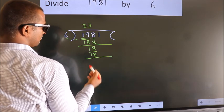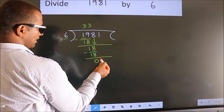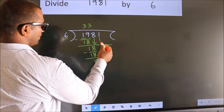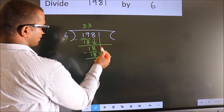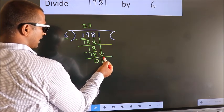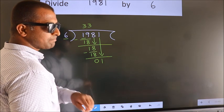Now we subtract. We get 0. After this, bring down the beside number. So 1 down. After this step, the mistake happens.